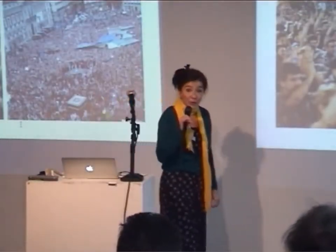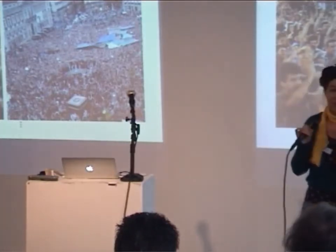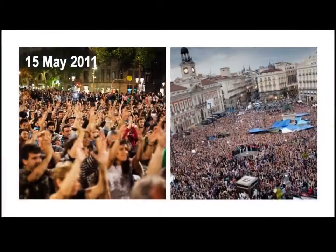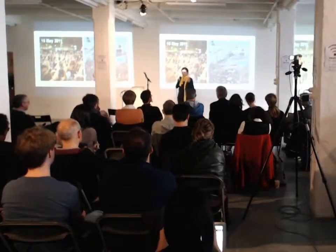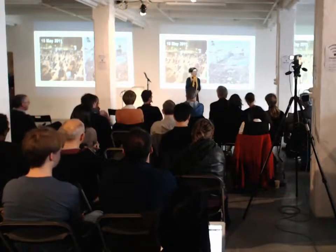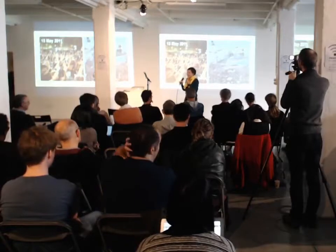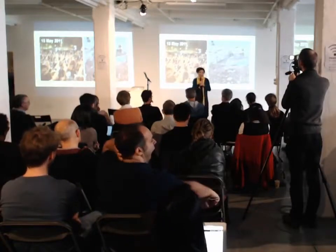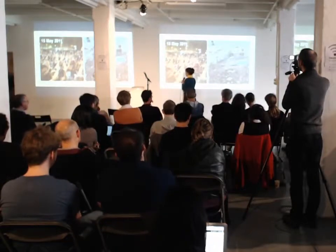On the 15th of May 2011, protesters in Madrid and other cities were claiming for real democracy now. It became the Indignados Movement, the 15M Movement, or the Occupy Movement. It took four years for these activists to enter the official political arena.